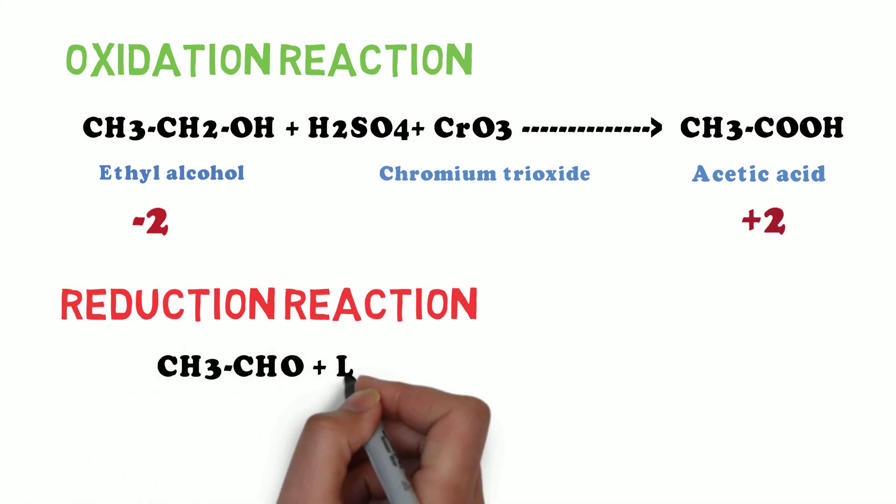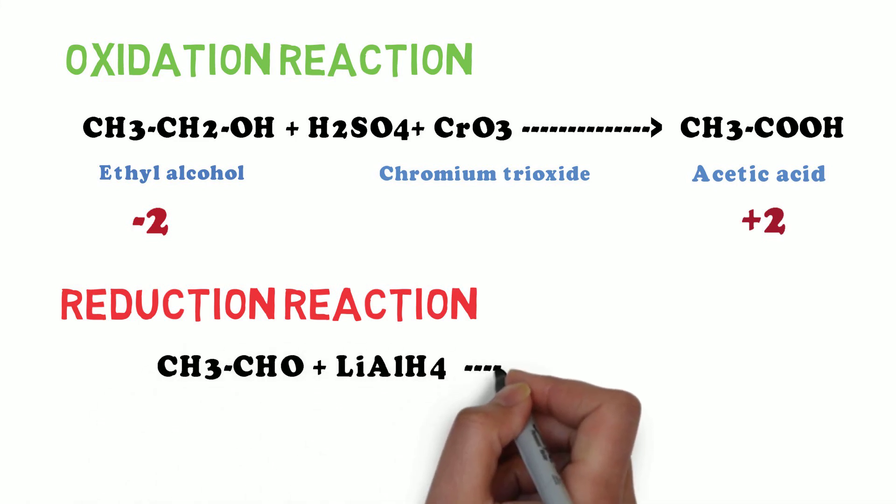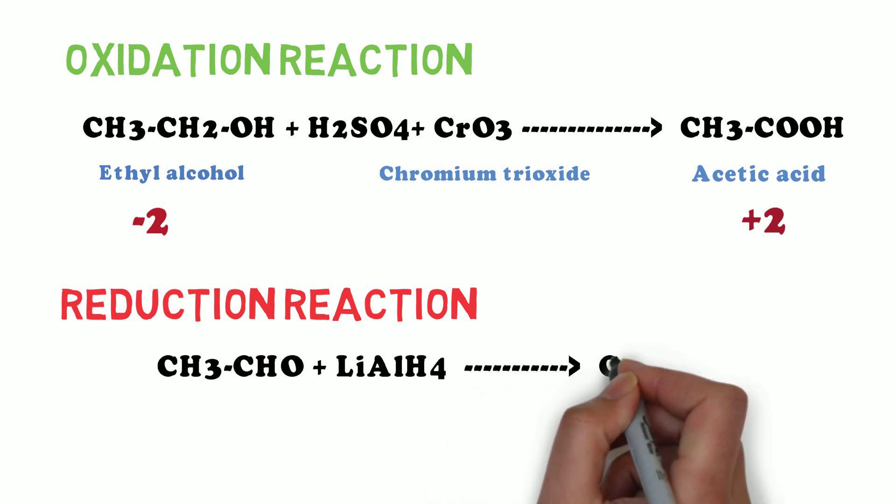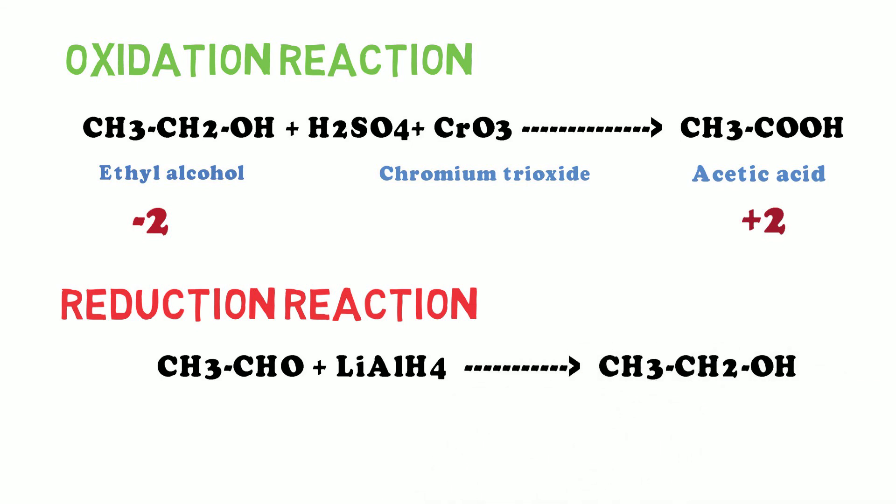Then reduction reaction. In reduction reaction, the acetaldehyde is treated with lithium aluminum hydride. Then it becomes CH3CH2OH. The acetaldehyde's oxidation number is zero and the product's oxidation number is minus two. So, it is an example of reduction reaction.